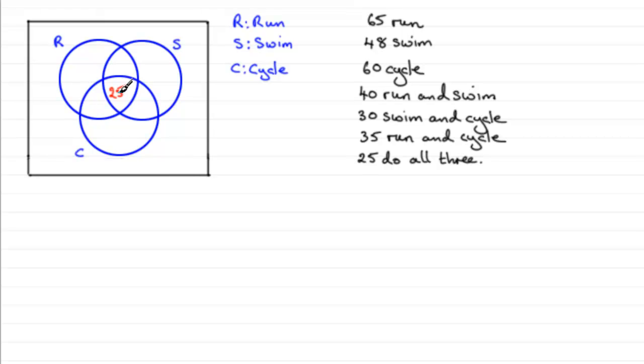35 run and cycle—that is these two regions. They might do swimming, but nonetheless they run and cycle. So if 35 cover that region, then that's got to be 10 in there.